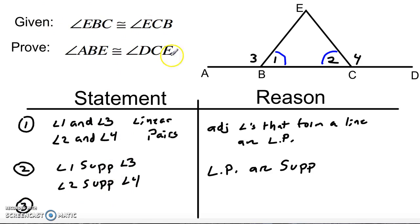In step three, I'm going to bring this given in here, that EBC, my angle one, is congruent to ECB, my angle two. So simply angle 1 congruent to angle 2, and that is given.